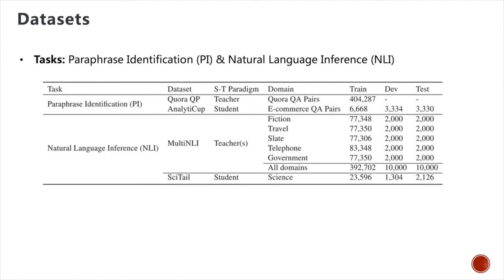For natural language inference, it is a task to determine the relation between sentence pairs, for example entailment, contradiction, or neutral between two sentence pairs. Here we use multi-NRI as the source domain and Cytale as the target domain.